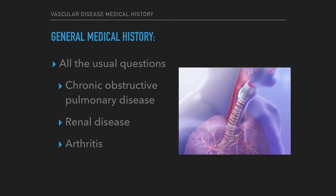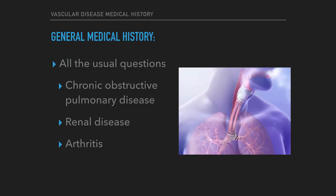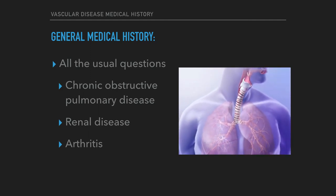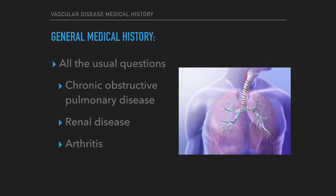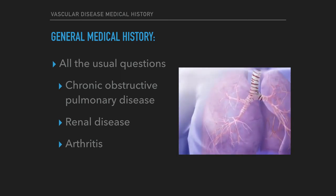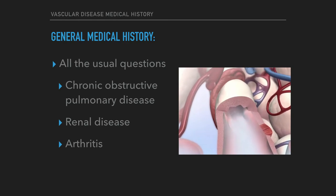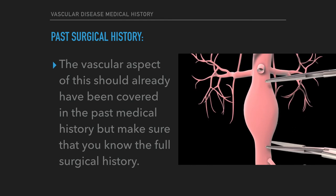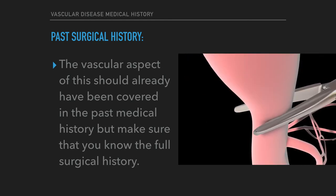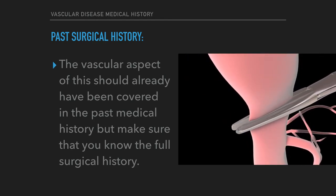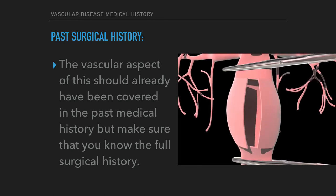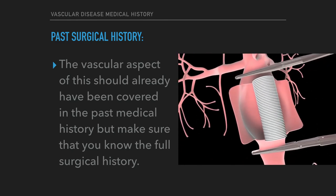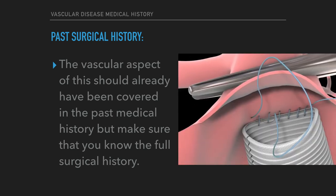General medical history: ask all the usual questions, including chronic obstructive pulmonary disease, renal disease, and arthritis, but pay particular attention to the chest. Past surgical history: the vascular aspect should already have been covered, but make sure you know the full surgical history — for example, an old appendectomy scar might be mistaken for an iliac artery exposure.